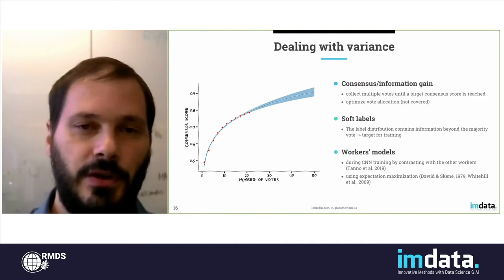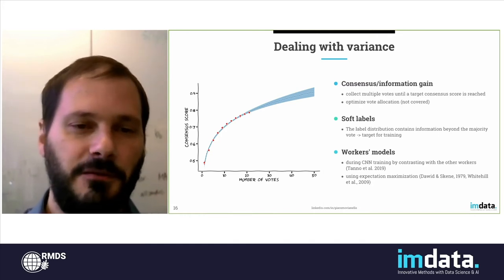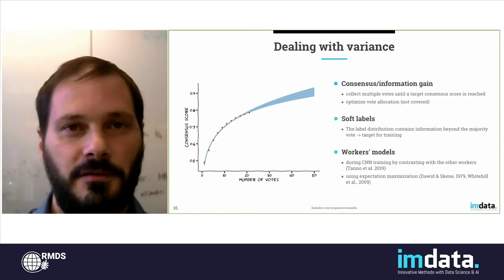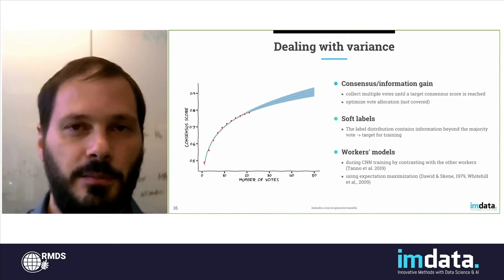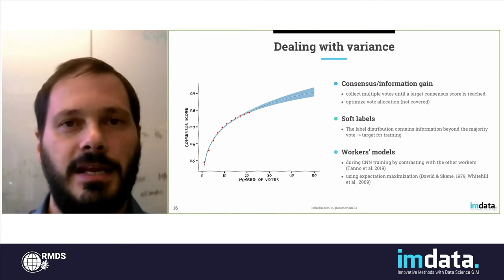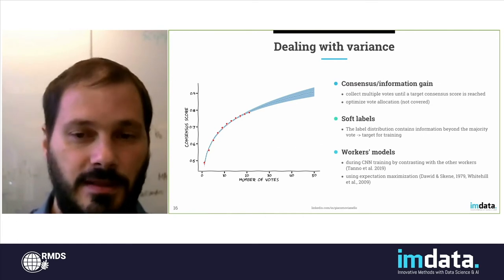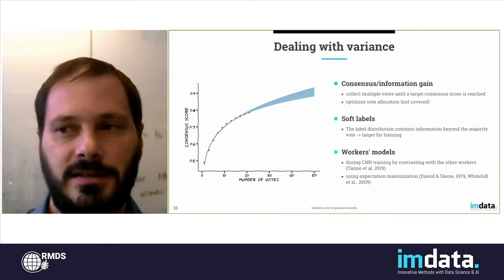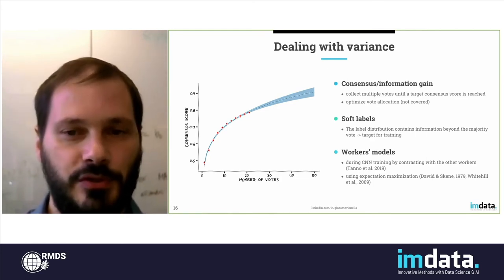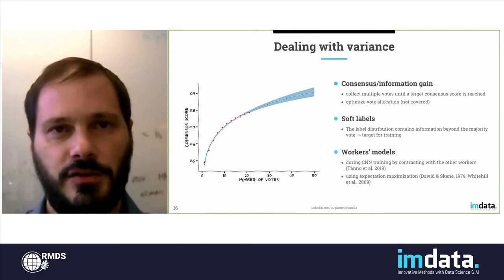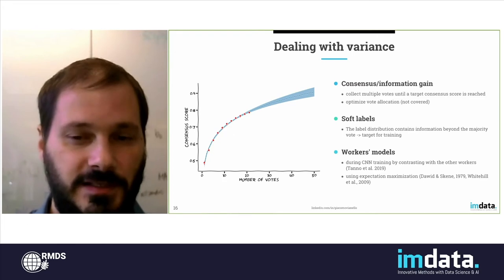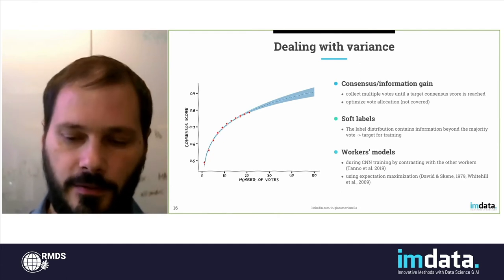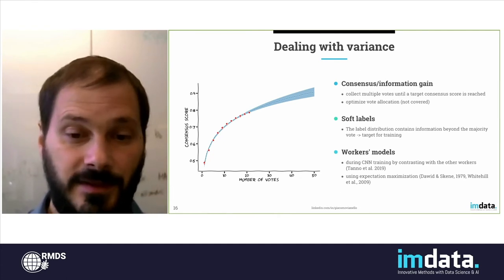Another thing you can do is train your model on soft labels instead of hard labels. So instead of feeding your model the majority vote, you feed it soft labels so that the model learns from the distribution of the votes, and in particular can learn that some examples are harder than others and should weigh less. You can also build models for the workers that will predict how a certain worker will respond to a certain situation — either training worker models as part of your model training, or building worker models on the side. These are some techniques to deal with variance.